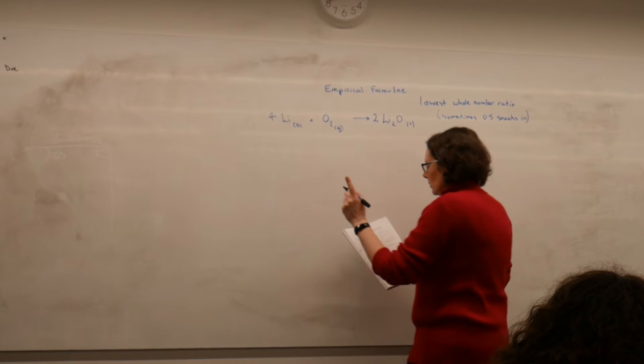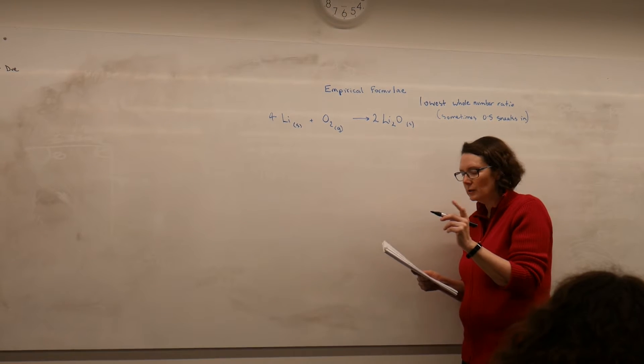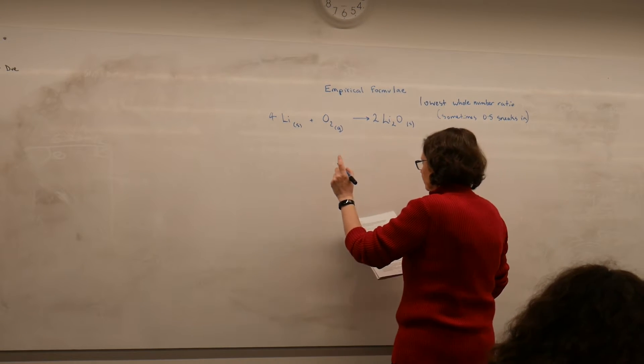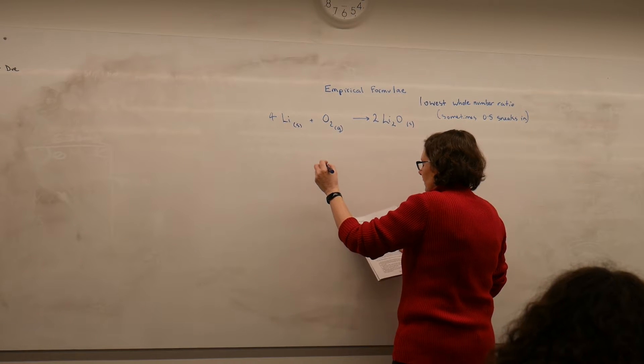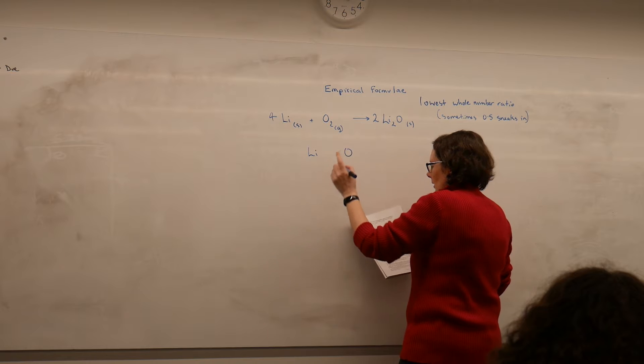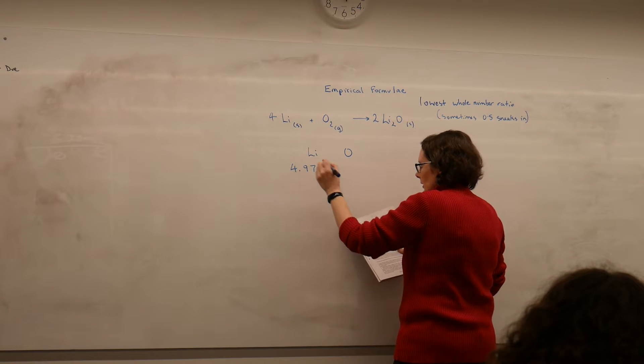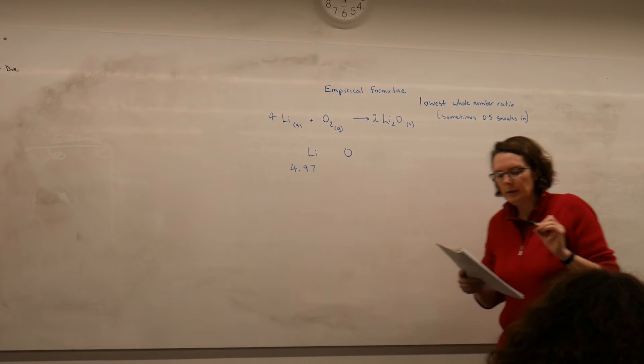So we know then, if we're going to work out the composition of our lithium oxide, we started out with 4.97 grams of lithium, didn't we?